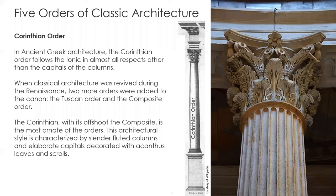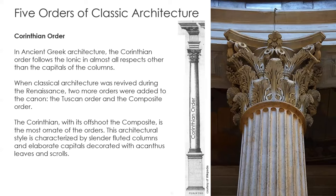The Corinthian order is from ancient Greek architecture but was mostly used by the Romans in later architecture, so we don't see it much in Greek architecture but more in Roman architecture. It's characterized by fluted columns and leaf-like capitals. Making this out of stone is a pretty daunting task, and I would imagine doing this in Revit would also be quite a challenge.